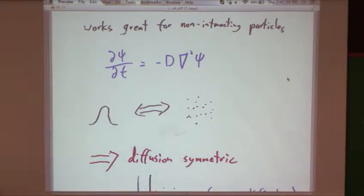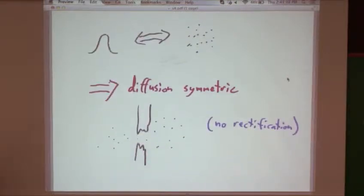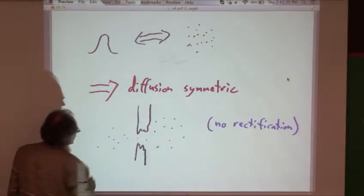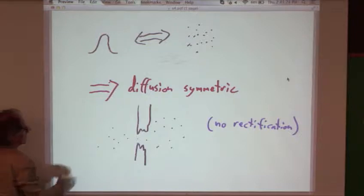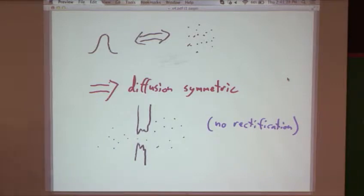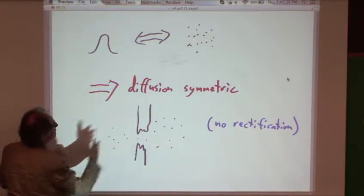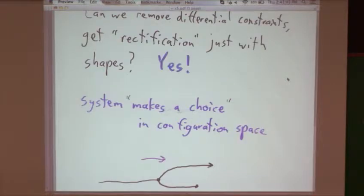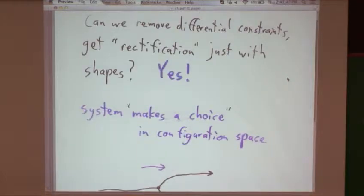This works, it's linear. You end up with a diffusion equation. It works great for non-interacting point particles. It's a prototypical field equation. But you can see just from the structure that diffusion is going to be symmetric. Given a weird shaped hole going from left to right, the diffusion is going to be the same because each separate particle's trajectories are reversible.